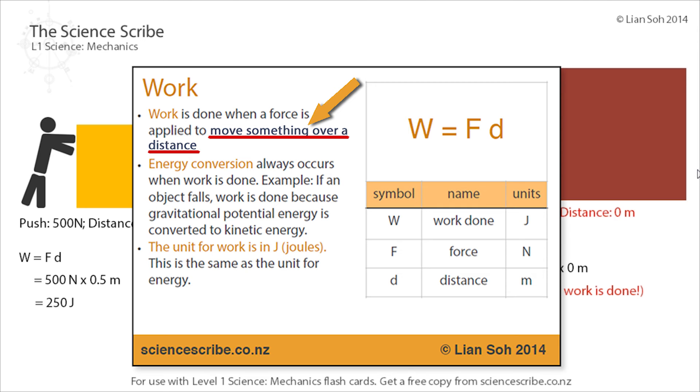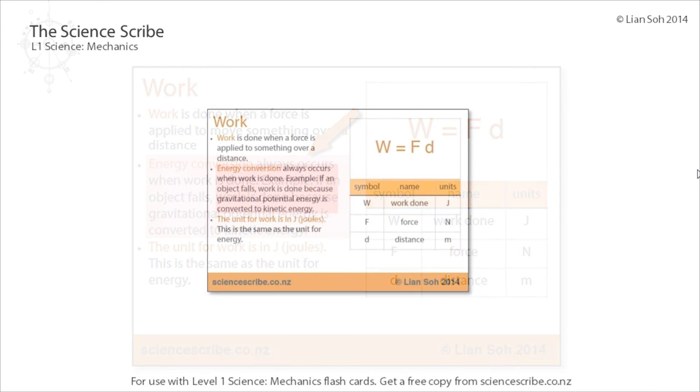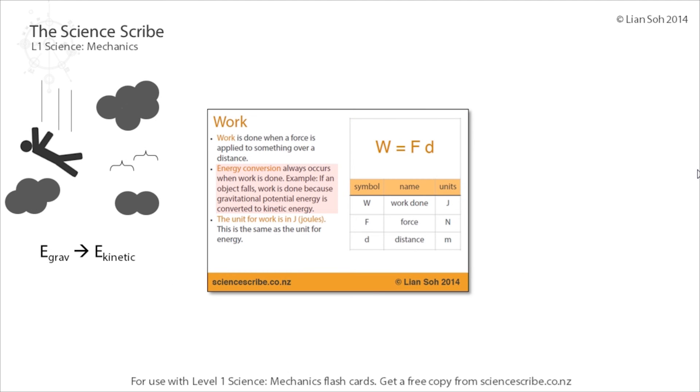The other way to think about work is that there's always going to be some kind of energy conversion taking place. If there's energy conversion taking place, you can say that work is being done as well. For example, if we had someone falling out of the sky for whatever reason, they're changing gravitational potential energy into kinetic energy, there's an energy conversion there, so work is being done.